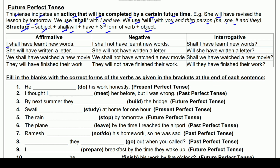जैसे: I shall have learnt new words — मैं नए words सीख लूँगा। I shall not have learnt new words — मैं नए words नहीं सीख लूँगा। Shall I have learnt new words? — क्या मैं नए words सीख लूँगा? She will have written a letter। She will not have written a letter। Will she have written a letter? — she के साथ भी 'have' का use करते हैं।